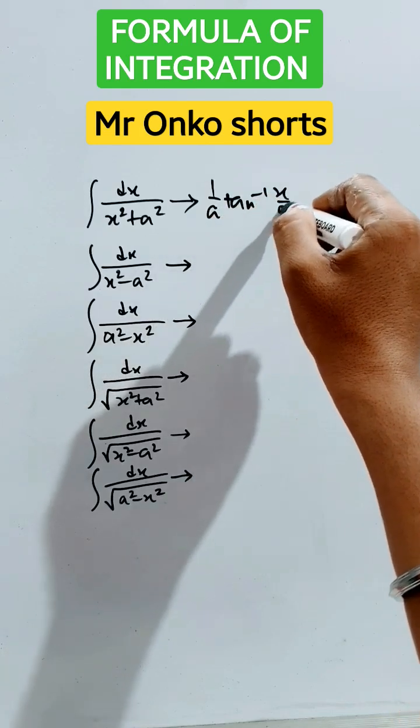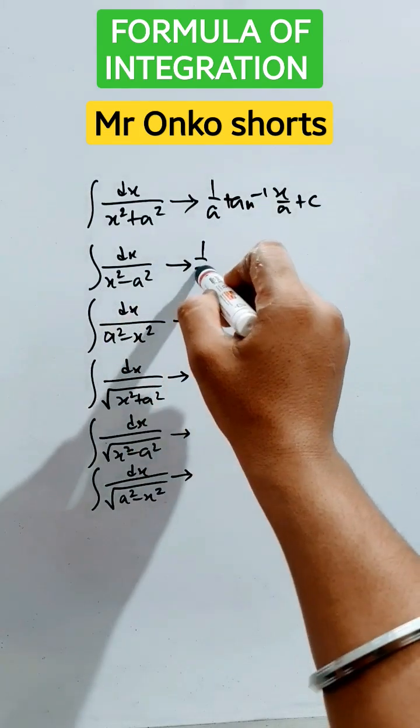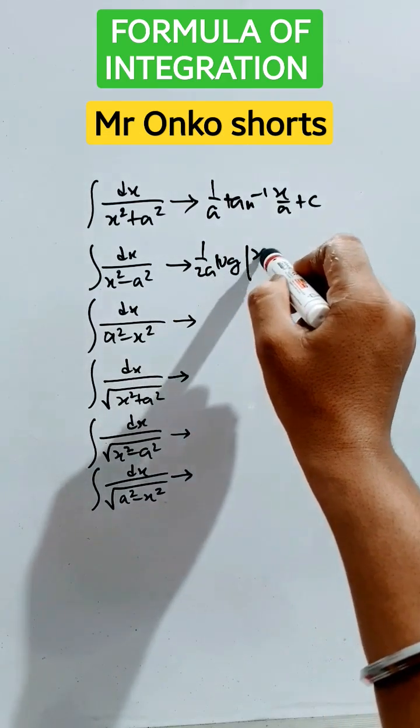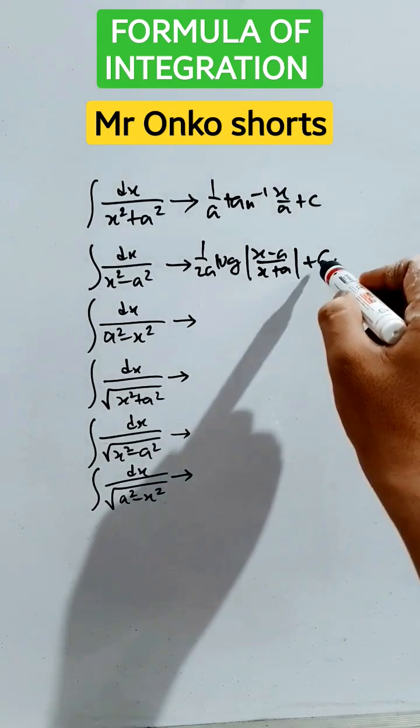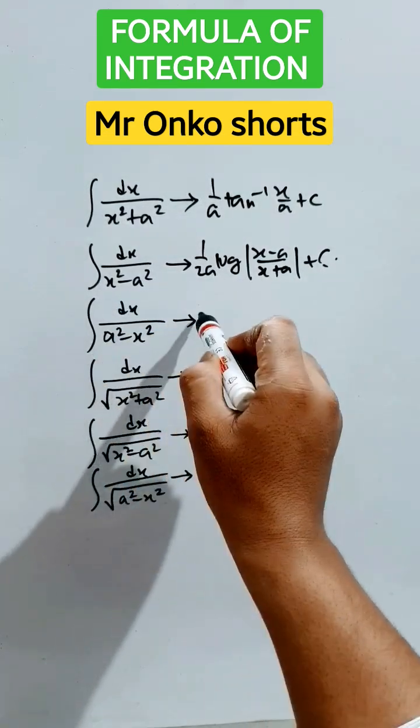Now dx/(x²-a²), that is (1/2a)log|(x-a)/(x+a)| + c. Now for a²-x², just take minus common and the formula will be same.